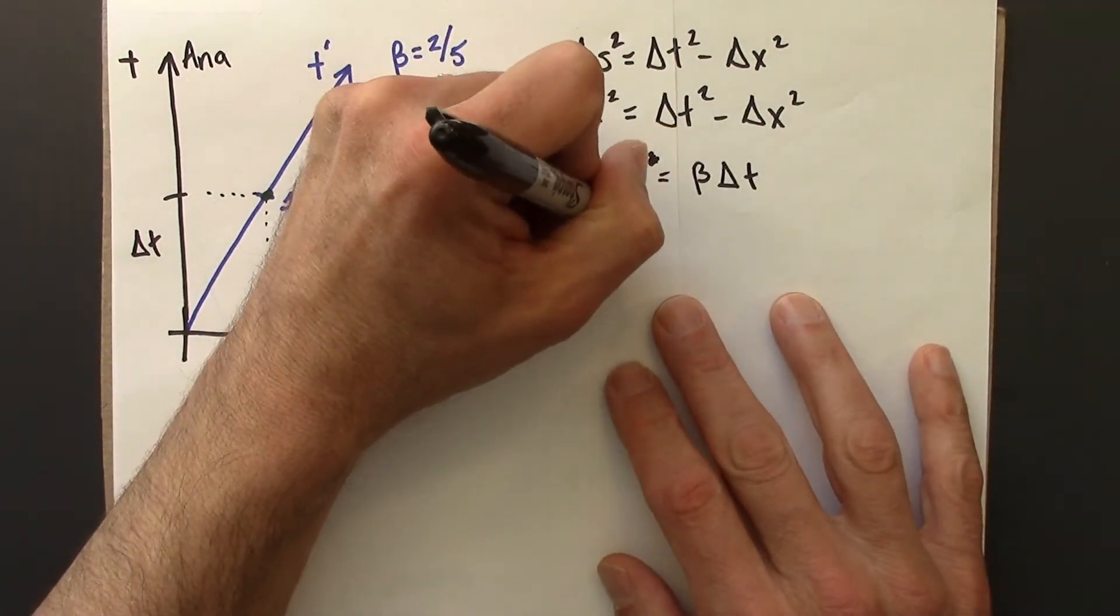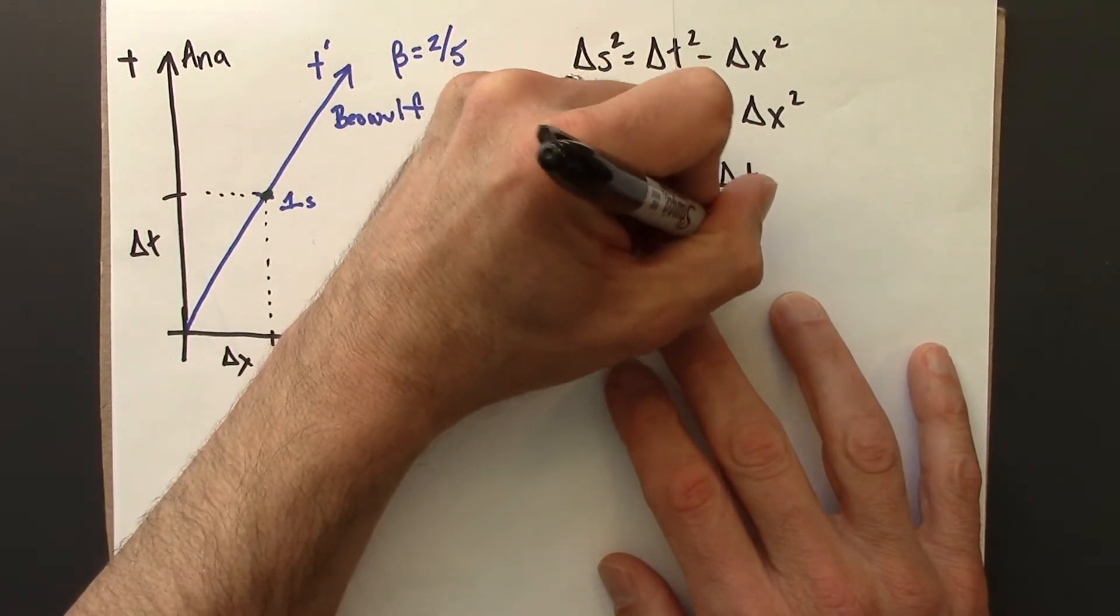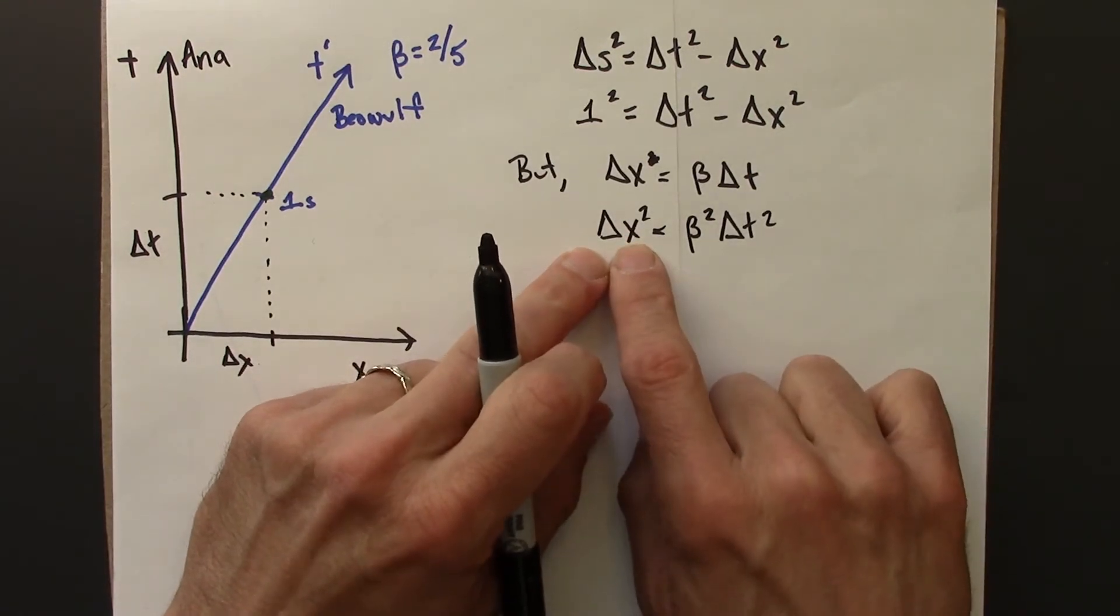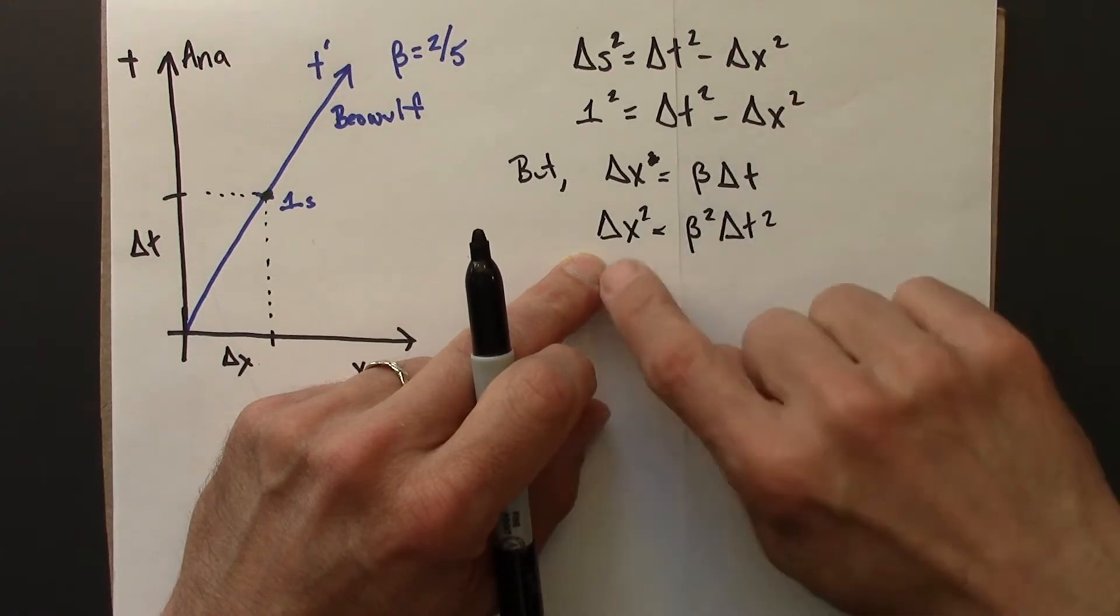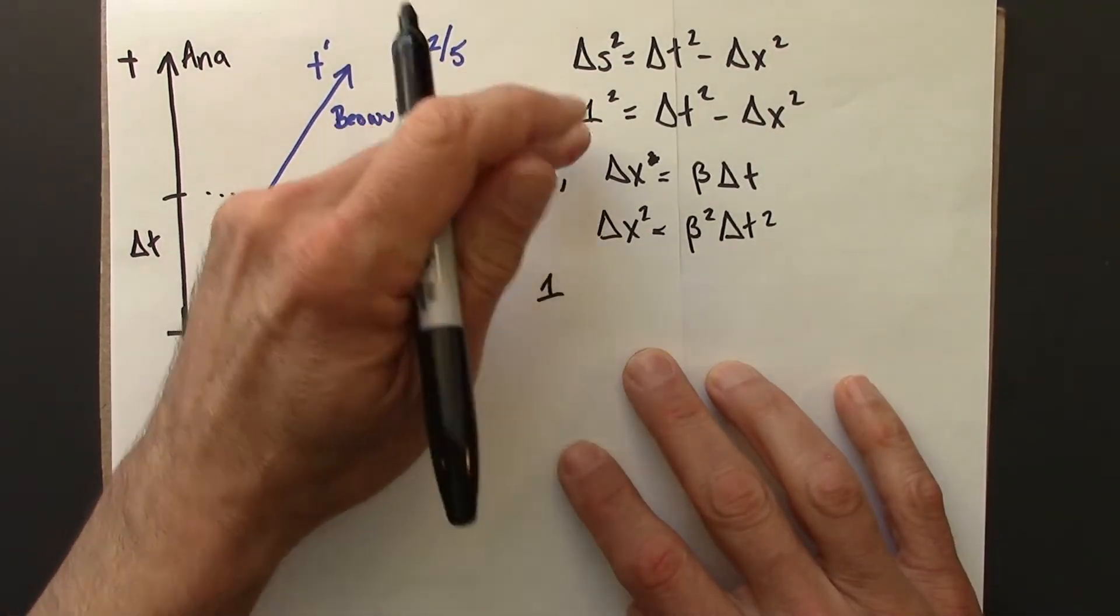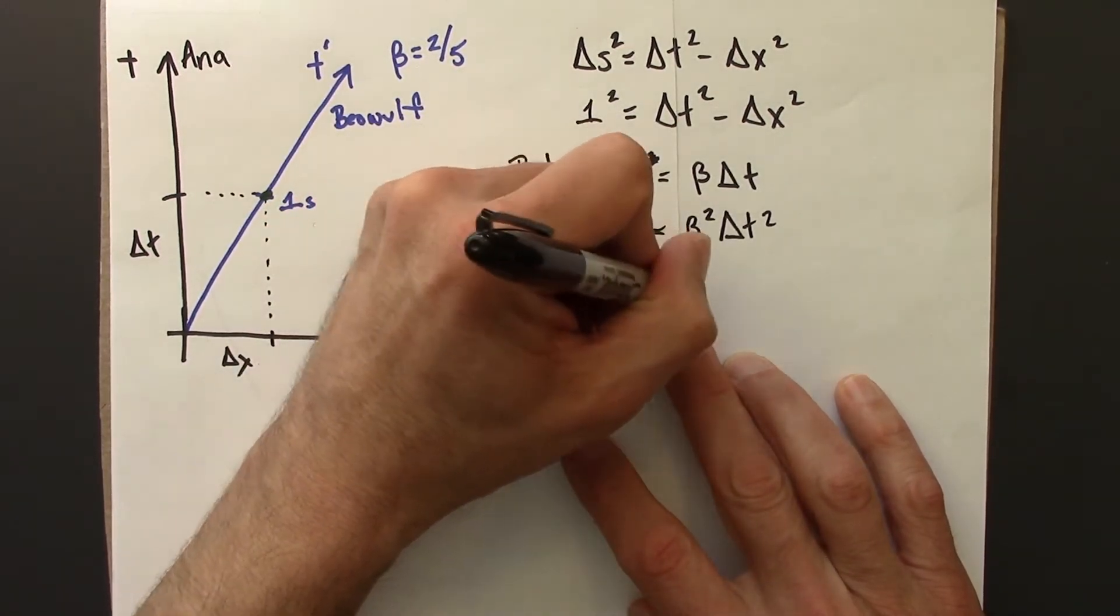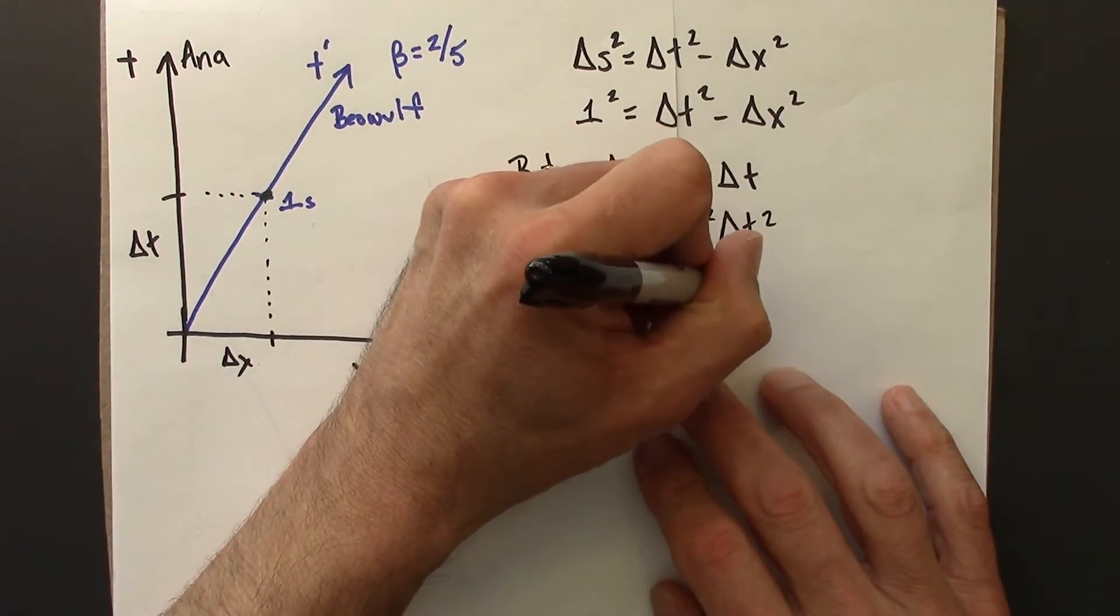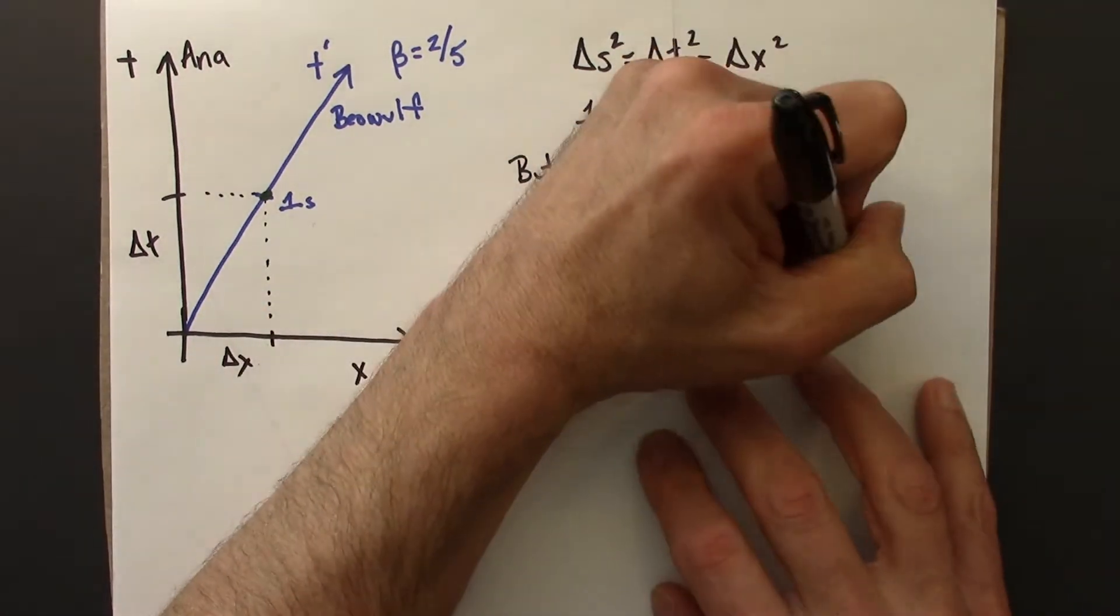So then, I can square both sides of this equation. Remembering to square the beta as well, I have to square everything. And then what I'm going to do is I'm going to plug delta x squared into this equation up here. So, I'm going to have 1, well, 1 squared is 1. Delta t is going to stay delta t. Minus beta squared delta t squared. And so now what I want to do,